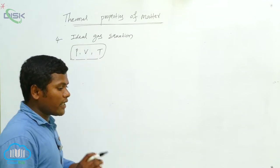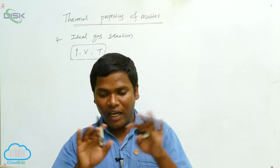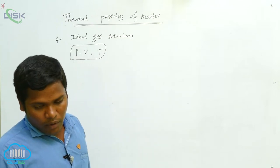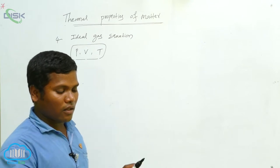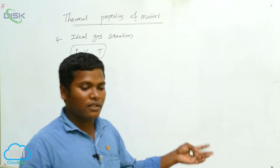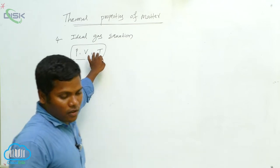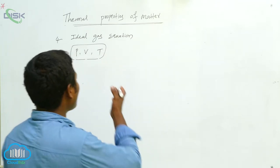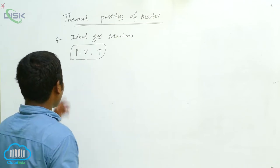For volume, consider the volume of gas filled inside a balloon. For pressure, suppose you are applying some pressure — say 20 or 30 pascal. Pascal is the unit of pressure measurement. When pressure is applied, the gas may expand or contract. Temperature is the degree of hotness or coldness — that is what we call temperature.